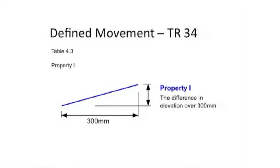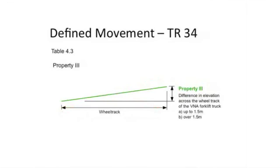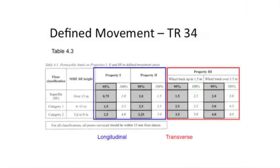So you've got a problem in terms of the floor profile. Property Two: if you consider the left-hand point as point one, the middle point as two, and the right-hand point as three, you carry on doing that at 300 millimeter intervals all the way down the aisle — left side and right side. The measure you're taking is the difference between one and three via two. While your left wheel is doing one thing, your right wheel is doing something totally different. So at each of those 300 millimeter reading points, you need to check transversely across the 1,500 millimeter aisle, what the difference in elevation is. And for all of that, you've got to set up some limits. TR34 is a huge design document, and tucked away in there is this particular aspect.